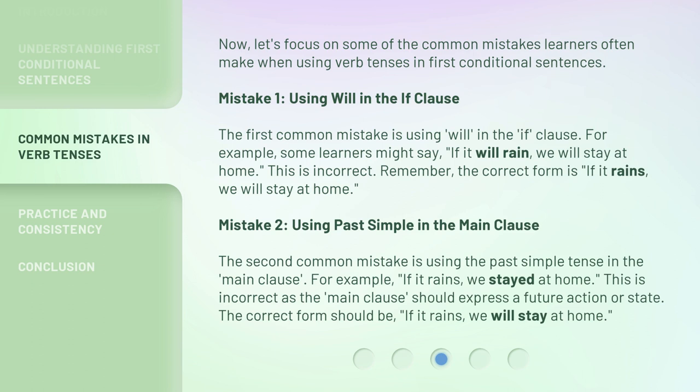The first common mistake is using will in the if clause. For example, some learners might say, 'if it will rain, we will stay at home.' This is incorrect. Remember, the correct form is: 'if it rains, we will stay at home.'